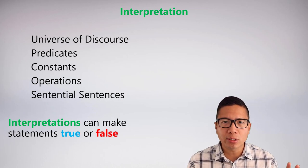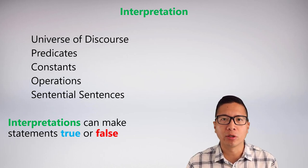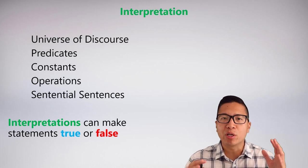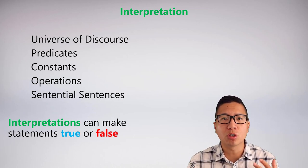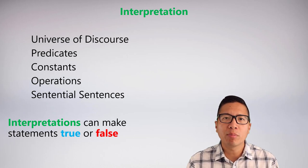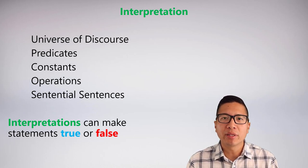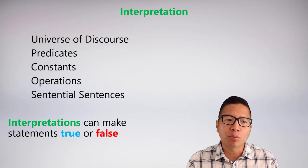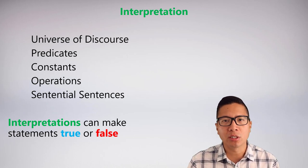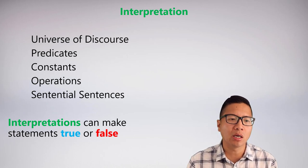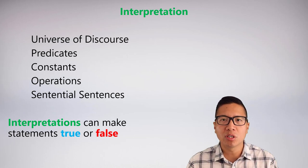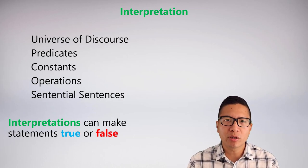We're going to develop the skills to create interpretations ourselves. An interpretation is actually something you're already very familiar with — it's essentially the abbreviation scheme you've used all along to symbolize with. More precisely, an interpretation tells you what the predicates mean, what the constants and operations mean, or it tells you the meaning of the sentential sentences.